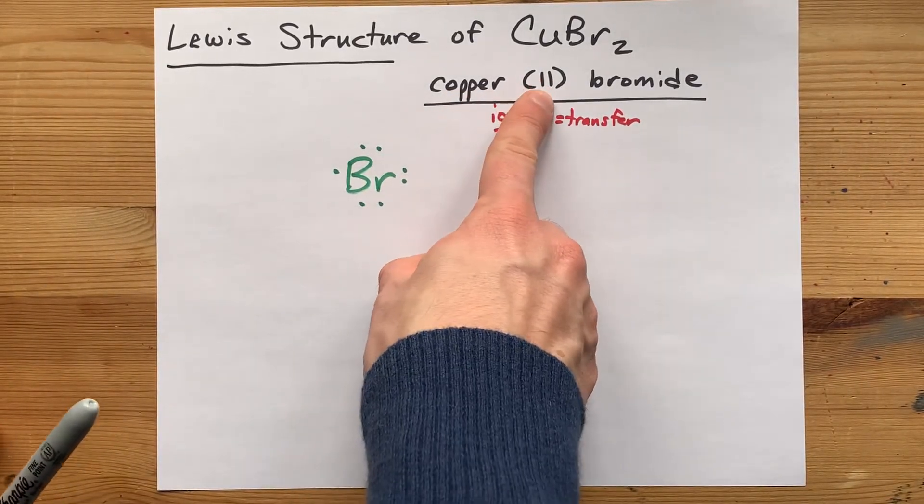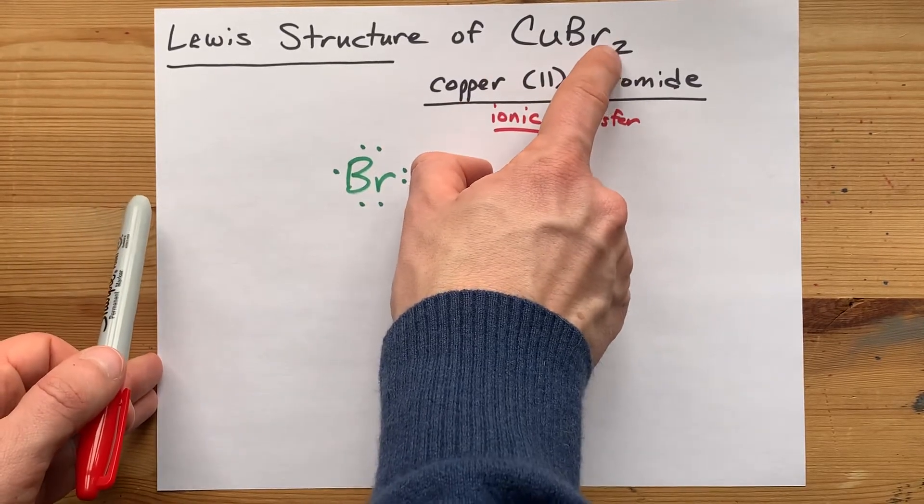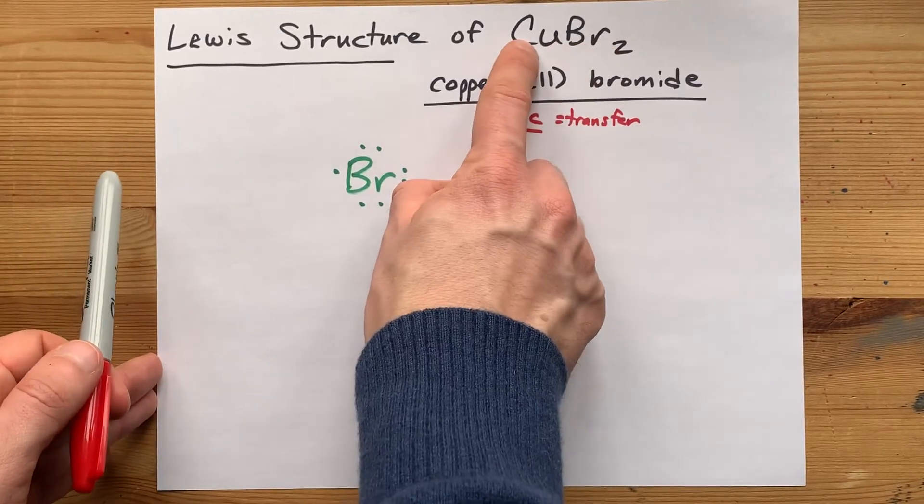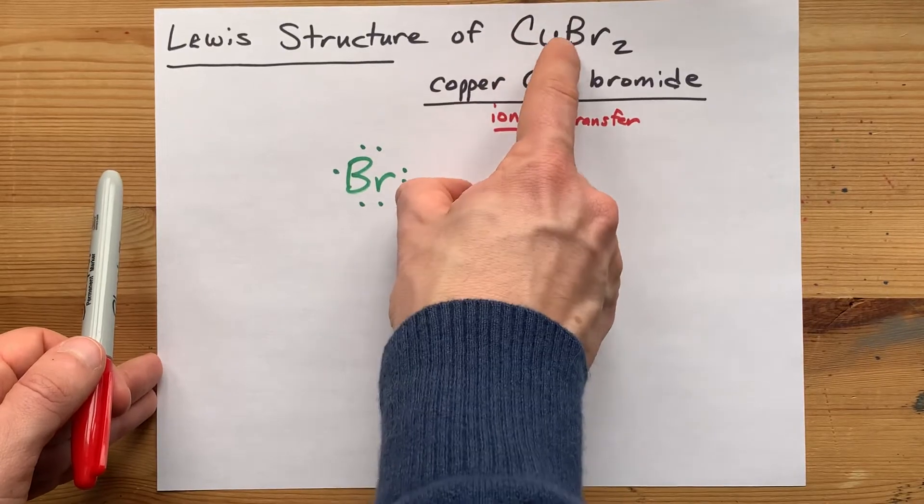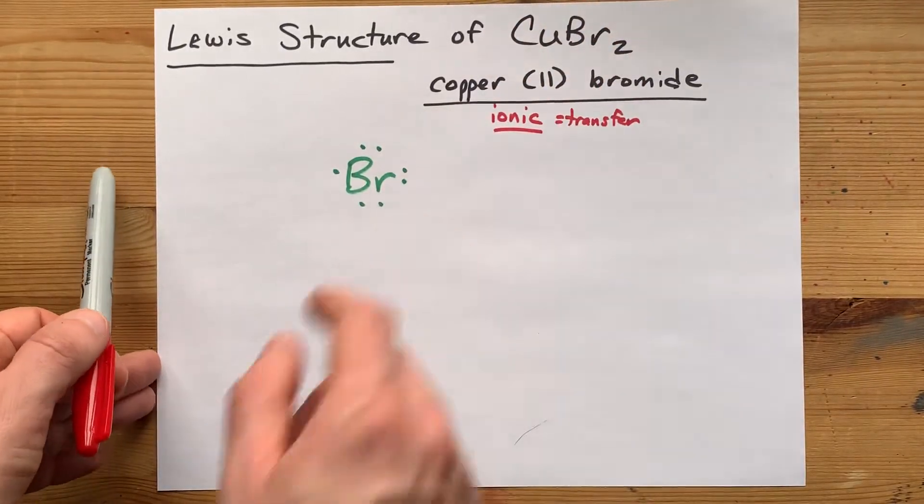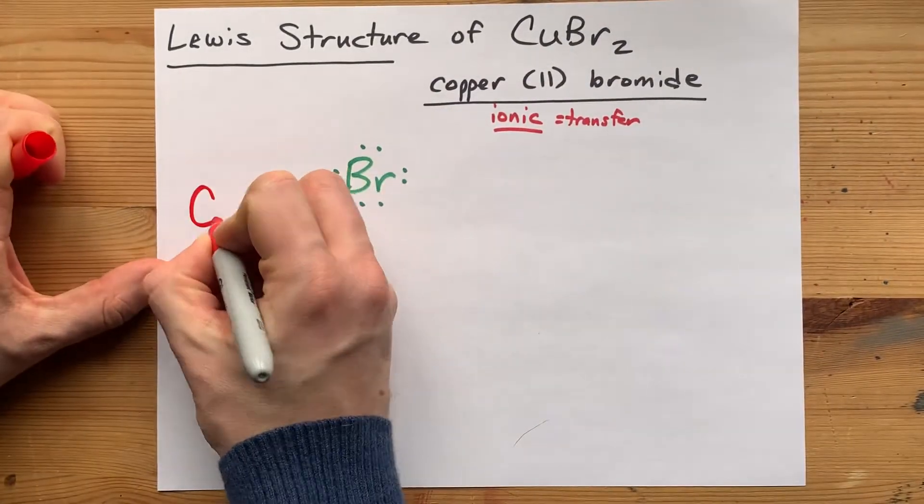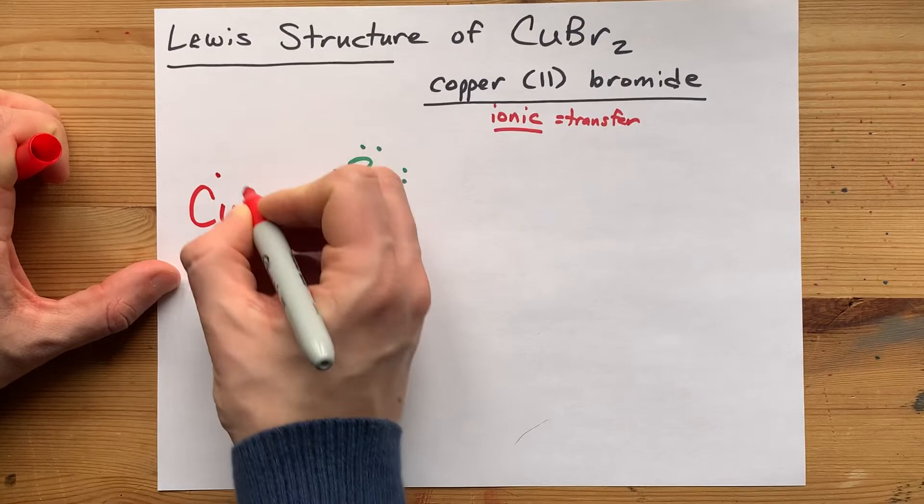Copper here has a charge of 2, and I know that from the name, but I can also see it here in the formula. Cu brought a +2 charge, bromine brought a -1 charge, and when you crisscross them, you get this formula.